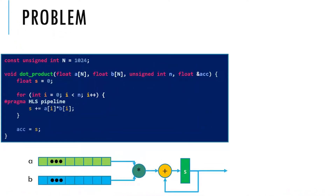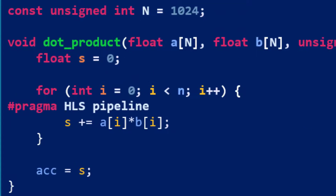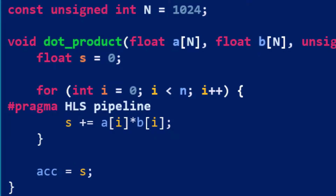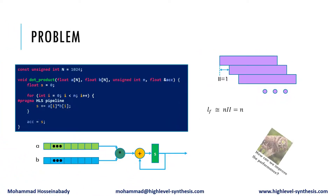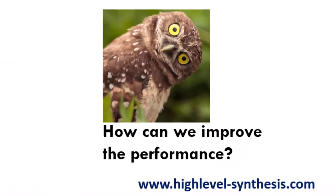This code implements the dot product of two vectors of size n and returns the result via the ACC argument. The code contains a pipelined for loop with the initiation interval of 1. Therefore, the whole function latency is about n cycles. Now the question is, how can we reduce the total latency? In other words, improve the performance.